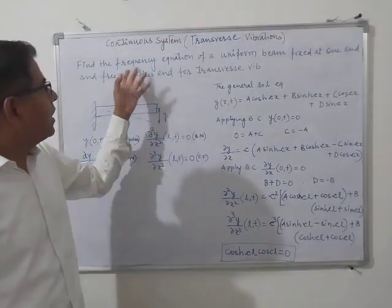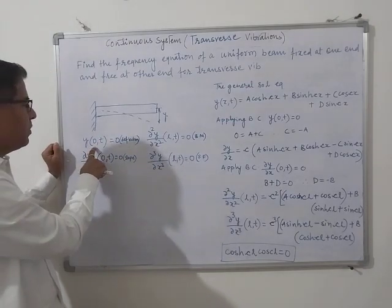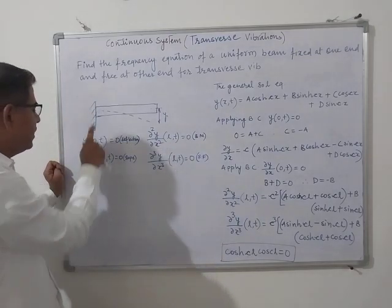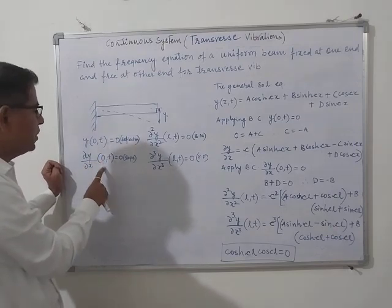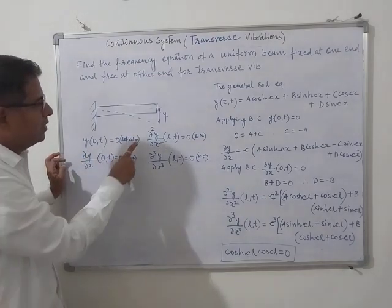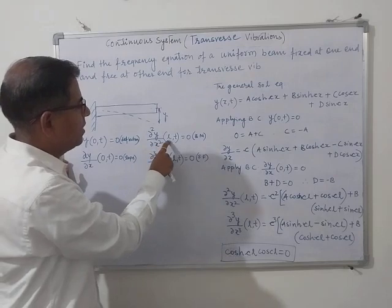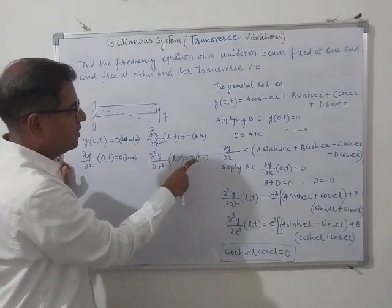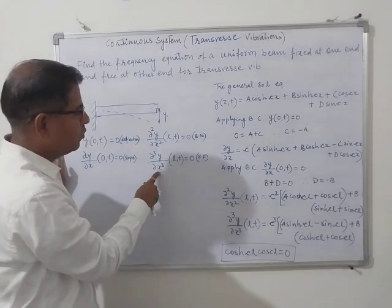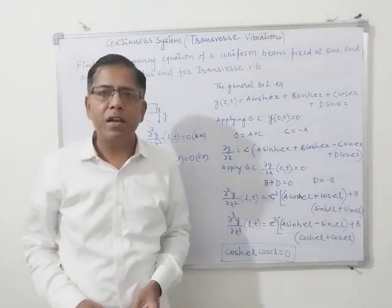For the fixed end condition, the deflection is zero. Similarly, at the fixed end the slope of the deflection is also zero, so del y by del x is equal to zero at x equals zero. At the free end, the bending moment is zero: del squared y by del x squared at (l, t) equals zero. The shear force is also zero at the free end: del cubed y by del x cubed at (l, t) equals zero. These are the boundary conditions for the fixed end and the free end for transverse vibrations of a beam.